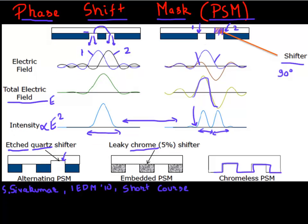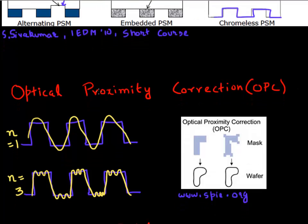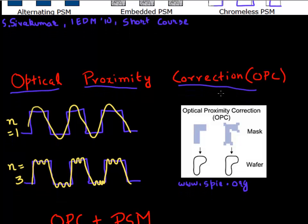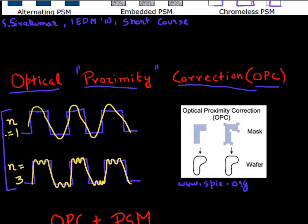The second technique is optical proximity correction, or OPC. It essentially deals with correcting for both interference and diffraction of light. You have a well-defined optical system where you know the dimensions exactly, the proximity between features, and the total dimensions of your system. You already know what is going to occur — how many orders of diffraction you're able to capture and that there will be interference.